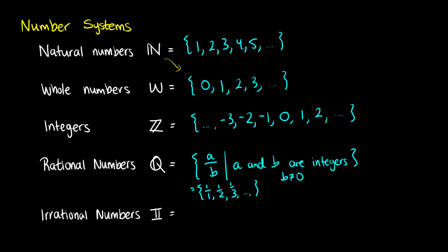Irrational numbers are just a set of numbers that are not rational. At this point it might be a little bit difficult to identify them, but you have some typical irrational numbers such as e and pi. What makes these irrational is that even though they have decimal points, they cannot be written as fractions. When you do the decimal conversion for pi, you have something like 3.141592 and so on, but there's no set pattern.